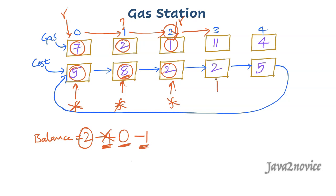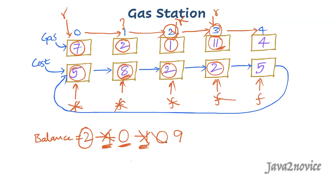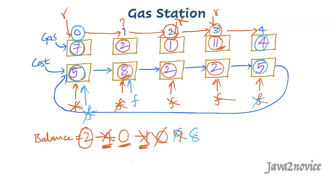Both pointers move to the next index and balance resets to 0. From index 3 to index 4 we need 2 units but have 11 available, so we move easily — balance is 9 units. Since the stations are in a circular route, next we travel from index 4 to index 0, needing 5 units but only 4 available. We take 1 unit from balance and move — balance is now 8 units. Then from index 0 to index 1 we need 5 units and have 7 available, so balance becomes 10 units.